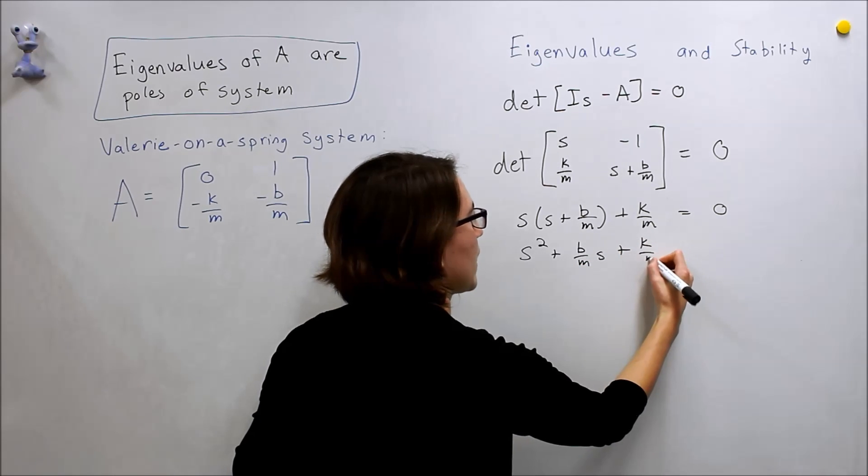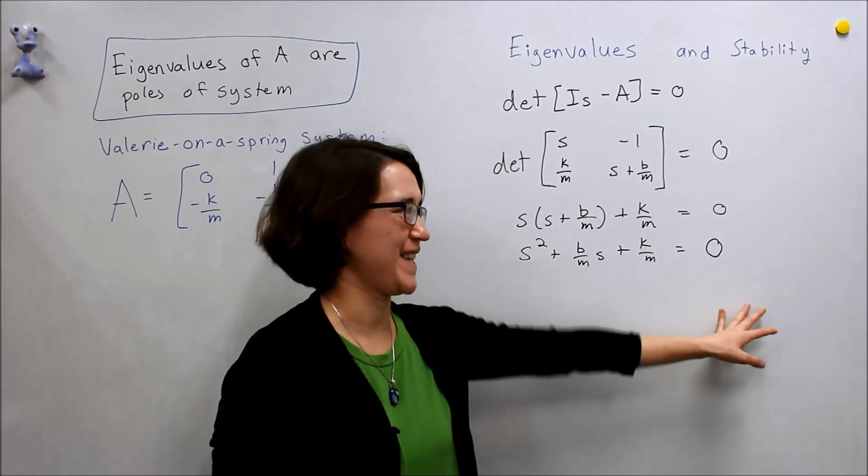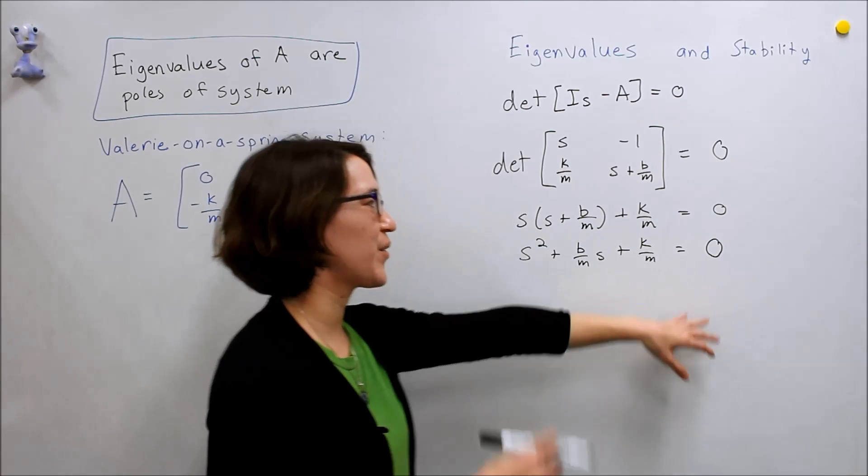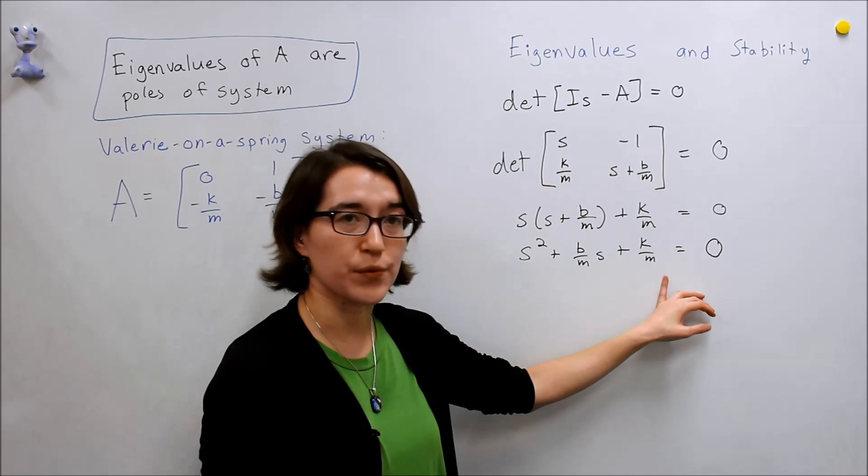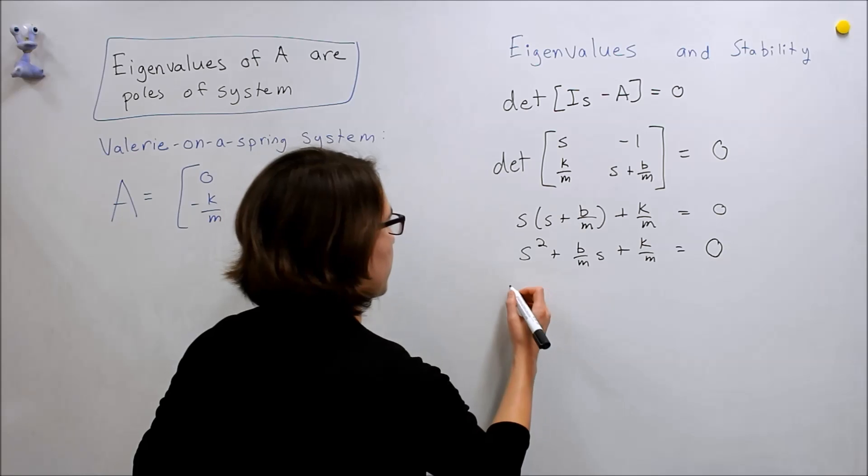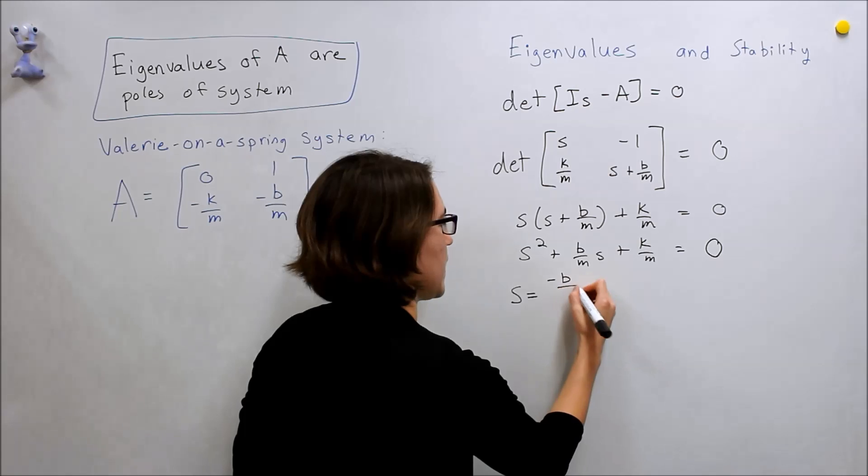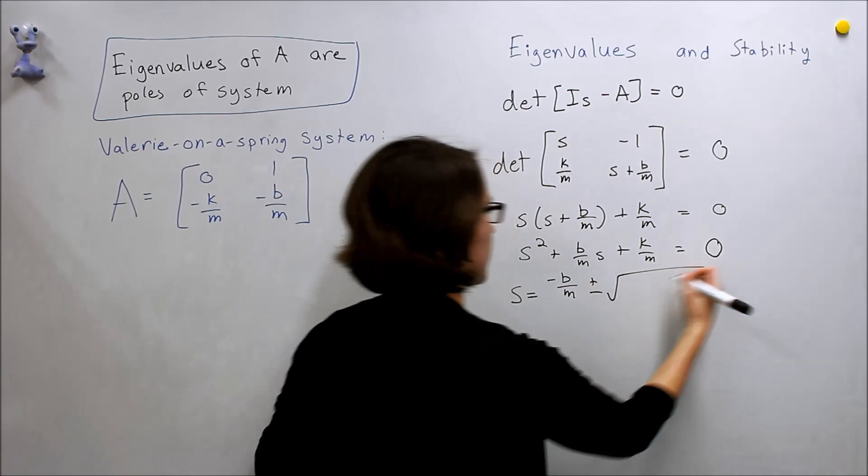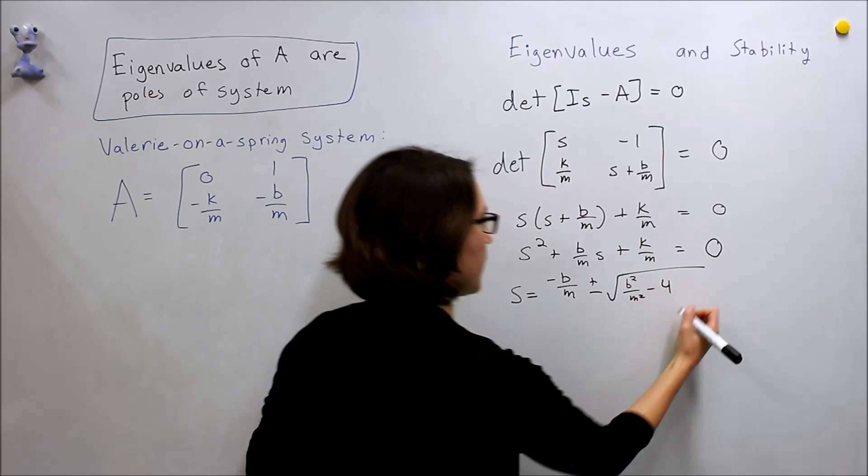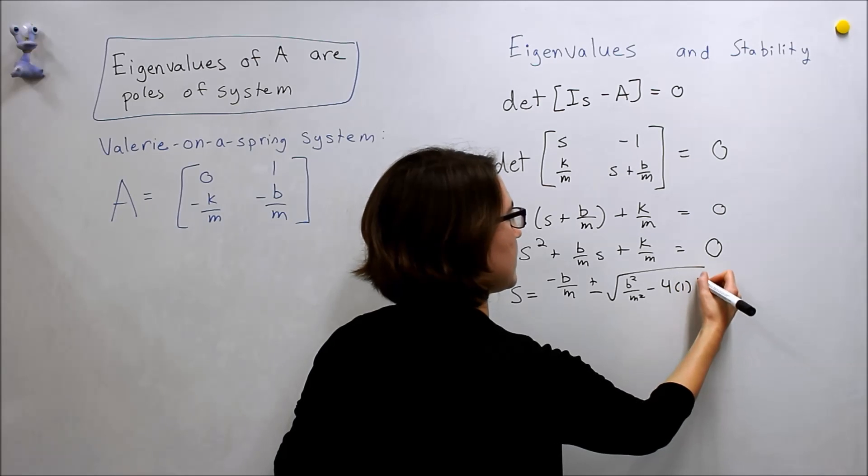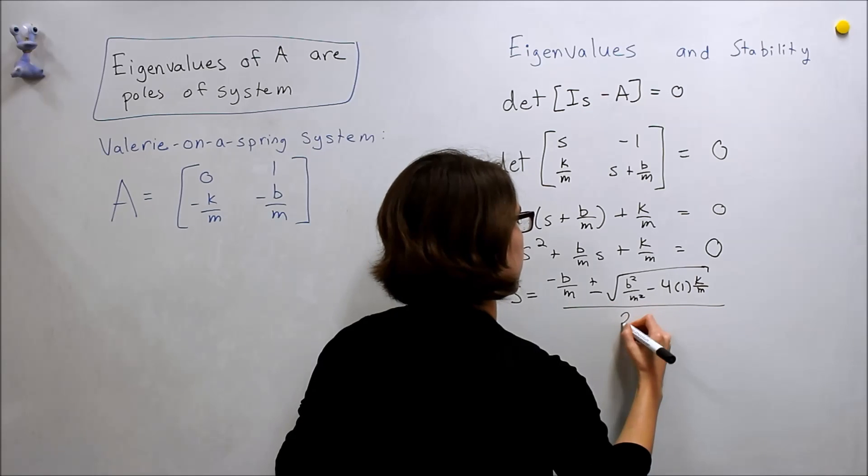So we have this expression, and now what we can do is, we're not quite sure what to do with it, so we can solve the roots by using the quadratic formula. So if we do that, we'll get S equals negative B over M, plus or minus square root of B squared over M squared, minus 4 times A, which is 1, and C, which is K over M, all of that over 2 times 1.